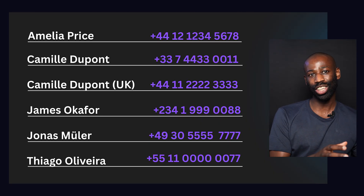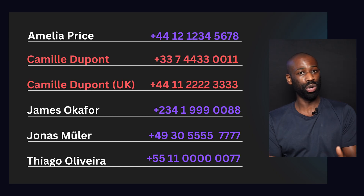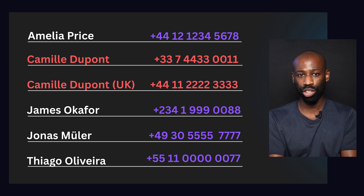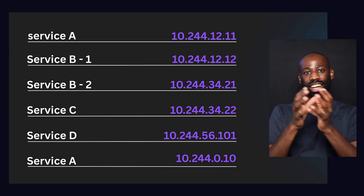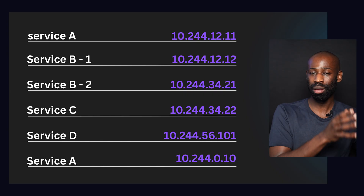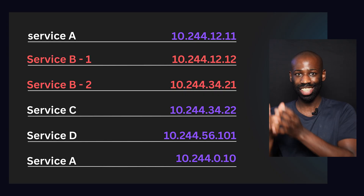To address that, we need a place where we keep track of all the active service instances and their IP addresses. This is called a service registry. The service registry is like a contact list on your phone — you have a list of names associated with phone numbers, and some contacts might have multiple phone numbers. Similarly, the service registry has a list of service names associated with their IP addresses, and a service that has multiple instances will have multiple IP addresses associated with it.